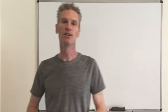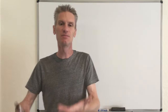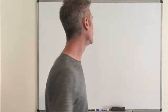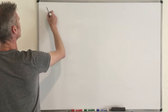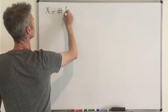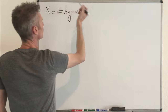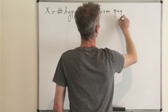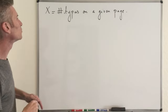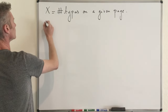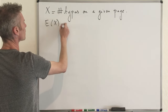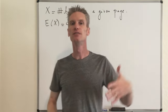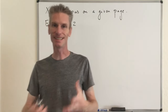We will call X the number of typos on a given page of the magazine — that's our random variable. What we know is that the expected value of X is equal to 0.2, and the goal is to compute the probability that X equals zero, and the probability that X is greater than or equal to two.